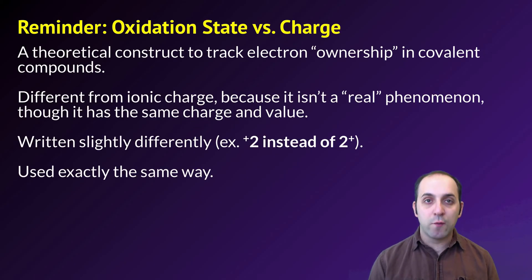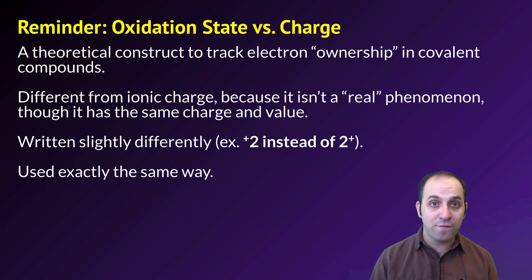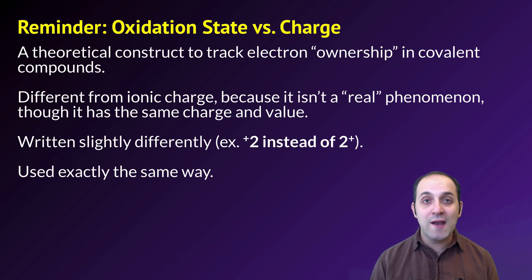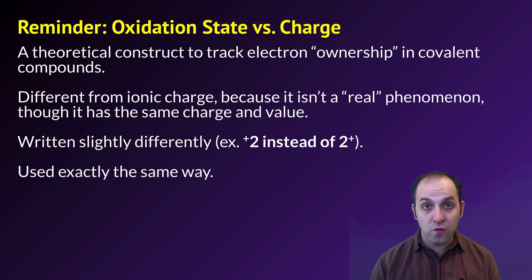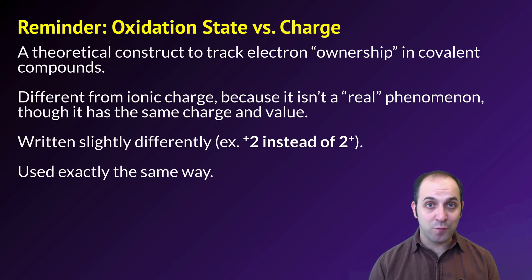Just as a quick reminder, there is a difference between oxidation state and charge. Oxidation state is a theoretical device that we use to track electron ownership in any compound, covalent compounds included. Ionic charge is a real phenomenon that atoms take on when they gain or lose electrons in ionic bonds. Ionically charged substances do have oxidation states equal to that ionic charge. We do write them slightly differently — for oxidation states, we write the sign and then the number first, and for ionic charges, we write the number and then the sign — but we use them exactly the same way.